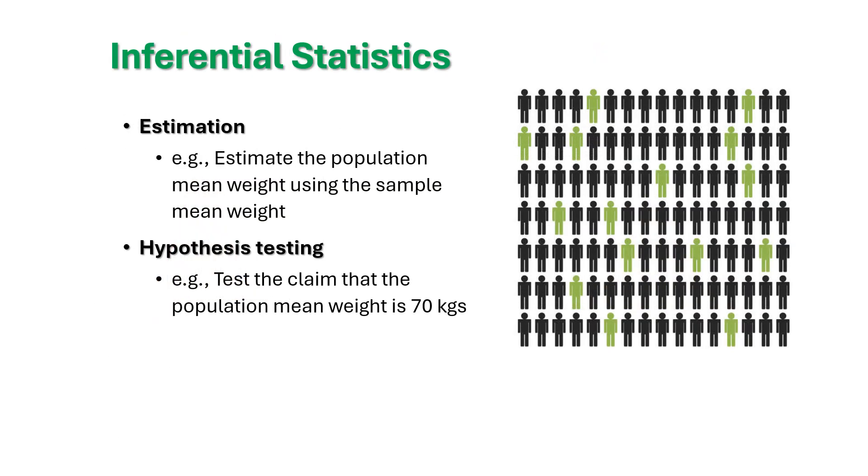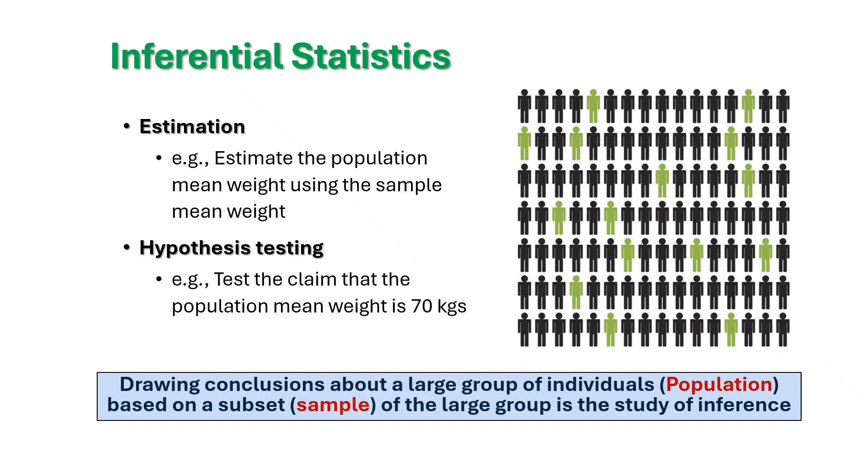All the population and sample is the basis of all inferential statistics. How do you sample? And you talk about the sample, and you then finally make the inference about the population. Estimation and hypothesis are the two important components of inferential statistics. Drawing conclusions about large group of individuals, that is nothing but population, based on a subset, that is sample. The large group is the study of inference.